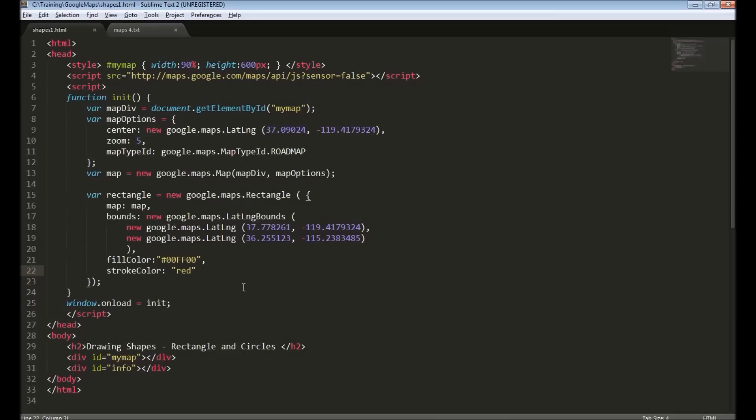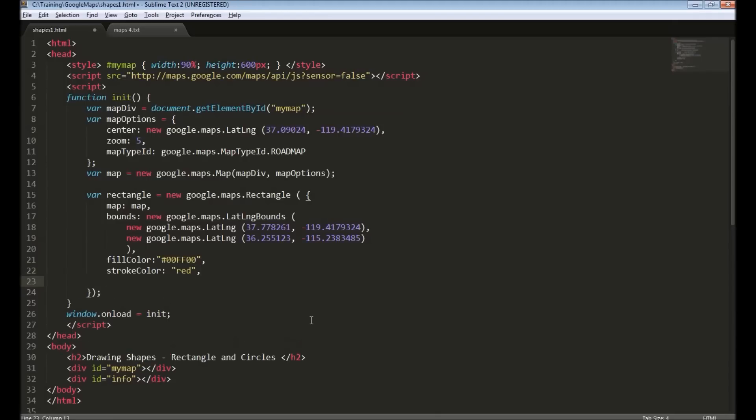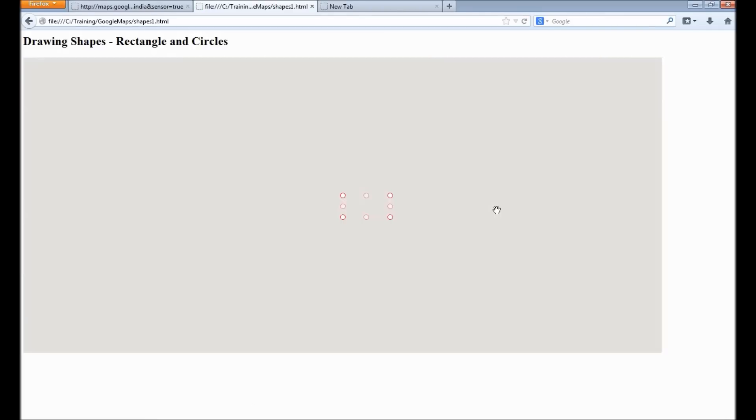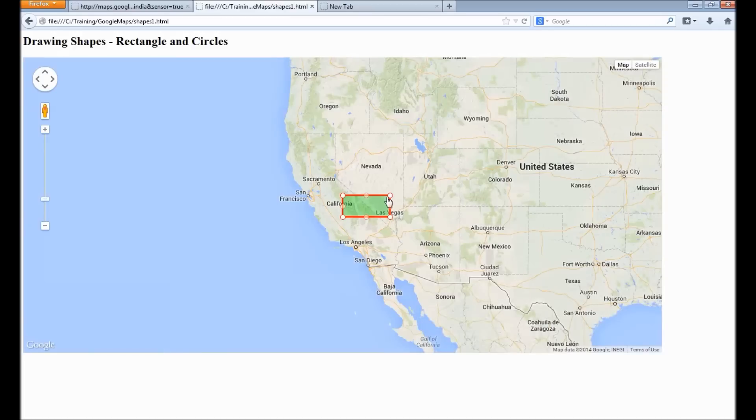Some applications may need to allow users to edit this rectangle - say they want to resize the rectangle, move it around, depending on your application needs. To do that, for the rectangle we can specify an attribute called editable and provide true. This will make the rectangle editable. Reload the page. As we can see, we have these controls to edit the rectangle. I can resize it at any corner or any side.